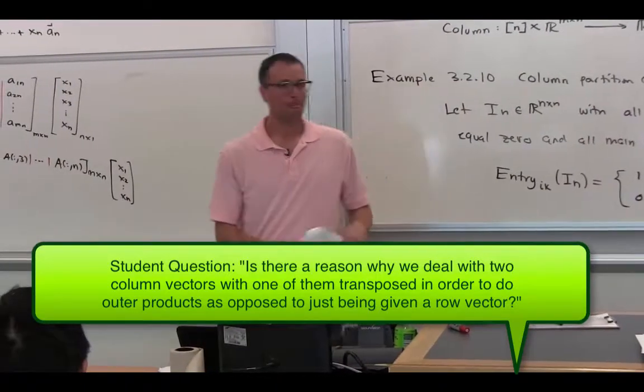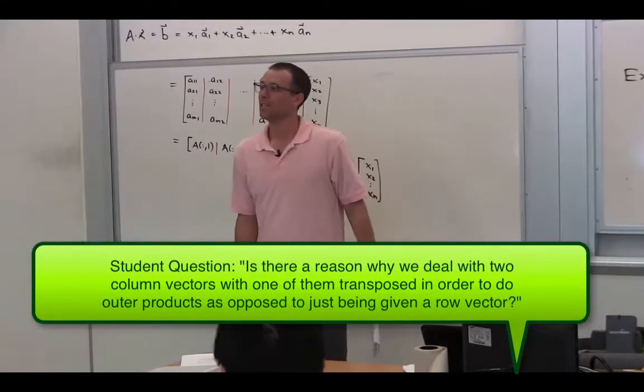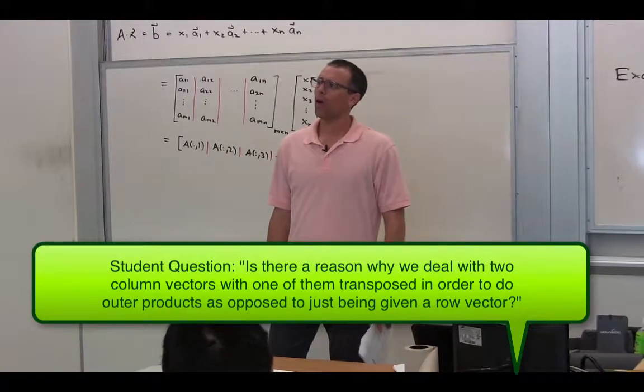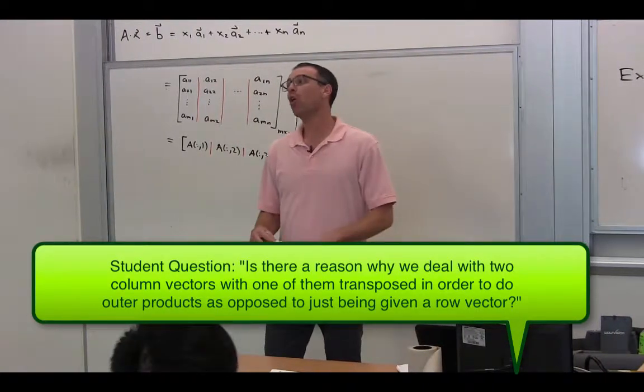Is there a reason that we deal with two column vectors, one of them transposed, in order to do outer products, as opposed to just being given a row vector? No, there's no reason.